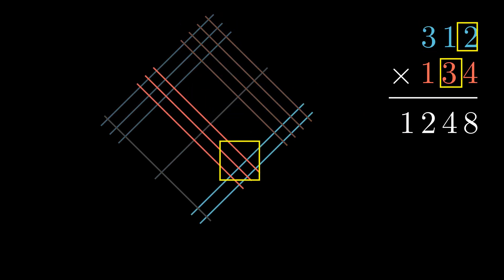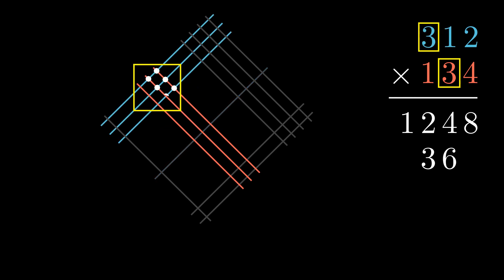And now, 2 times 3 equals 6, but we make sure we write it in the same column that 3 is. Up next, we have 3 times 1 equals 3, and then 3 times 3, which is equal to 9.